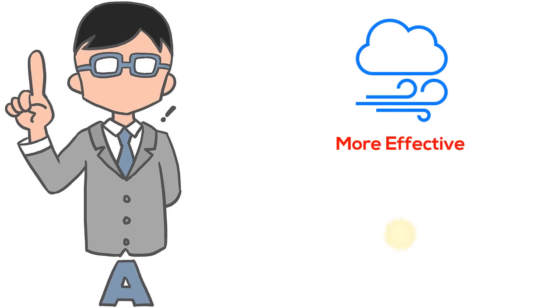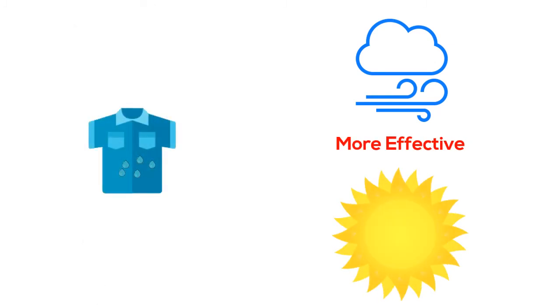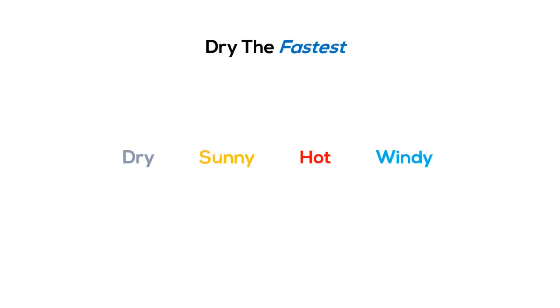So the answer to the question: wind is more effective than the sun in drying clothes. It moves the particles of air which collide with the water molecules of the fabric, speeding up evaporation. The heat of the sun causes a similar process, just more slowly. Clothes will dry the fastest when hung up in a dry, sunny, hot, and windy climate.